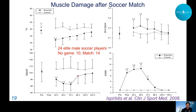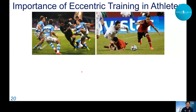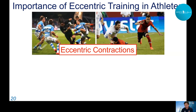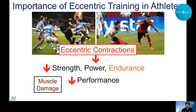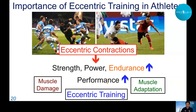We need to consider recovery strategies for these athletes. Eccentric training is very important for athletes because team sports involve many eccentric contractions — stopping, changing direction, preventing falling. More eccentric contractions in a match lead to greater strength and power loss, and can affect endurance performance toward the end of the match, potentially causing further muscle damage in subsequent days.